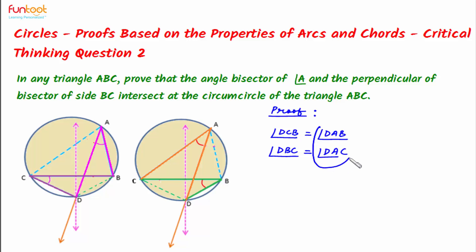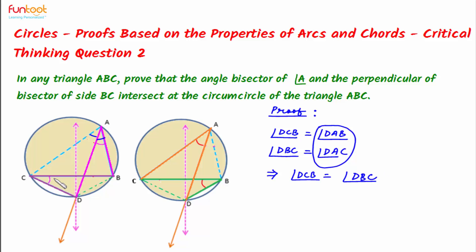Now, angle DAB is equal to angle DAC, as it is given that AD is the angle bisector, so these two angles are equal. Therefore, angle DCB equals angle DBC. This implies that in triangle DBC the two base angles are equal, so DB will be equal to DC, as sides opposite equal angles are equal.